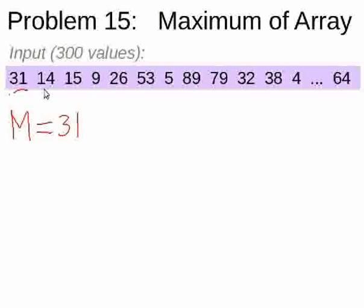The next is 14. And when we compare it with 31, we found that it isn't greater, so we safely ignore it. And continue. 15 is also less and also is ignored. The same with 9 and 26.